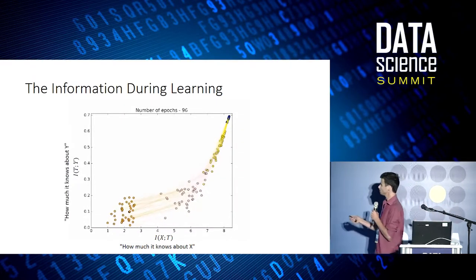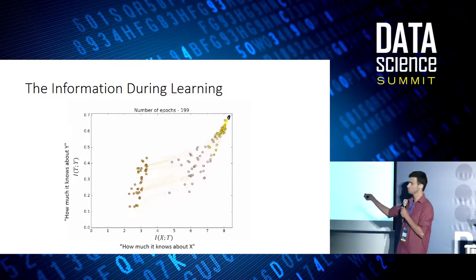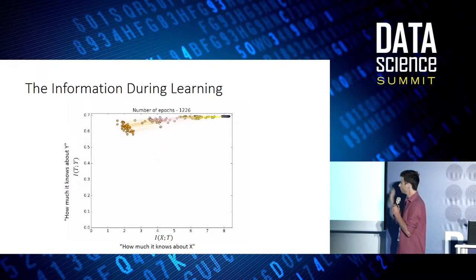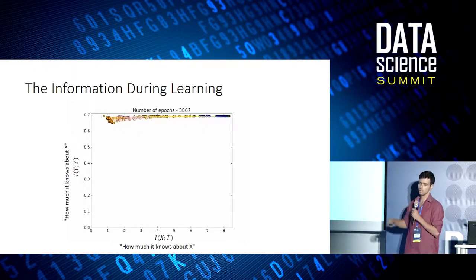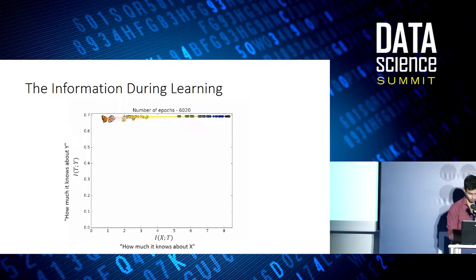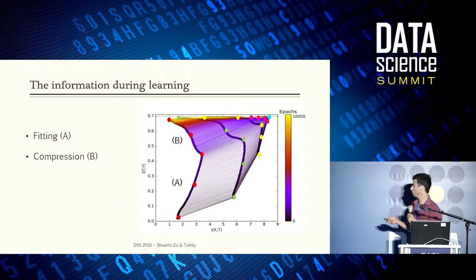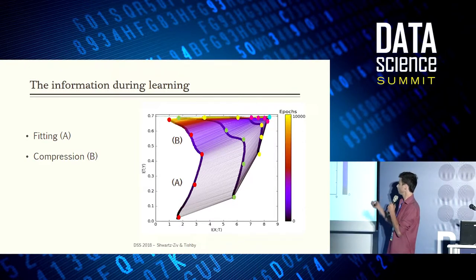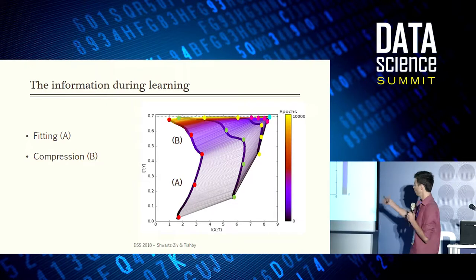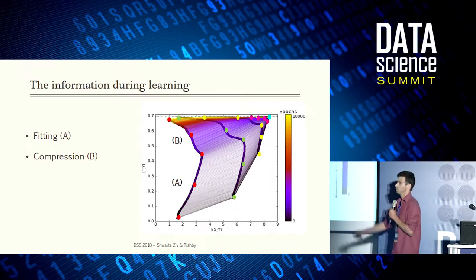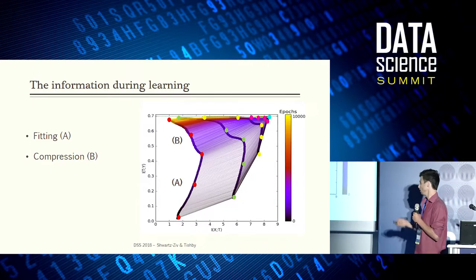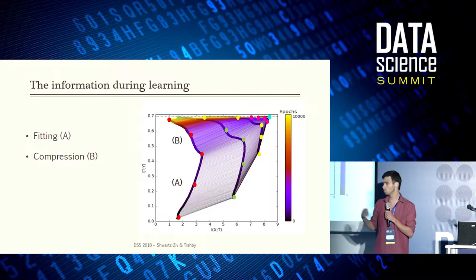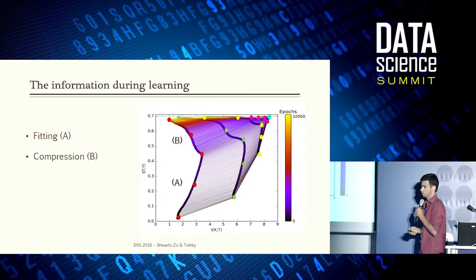We will see a movie showing the information in the network during the training process. We can see two distinct phases. The first phase is an increase in information with the labels. Then, after the points concentrate around some point, we see a very slow compression phase where we compress our representation. Averaged over all initializations, with different colors for different epochs — black at the beginning and yellow at the end — we again see the two phases: fitting to the labels, then slow compression. All the layers compress their information with the input.